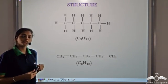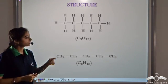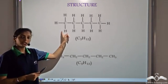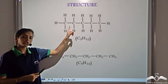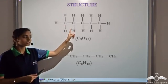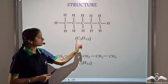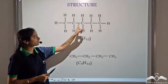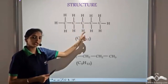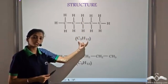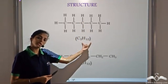We have seen how to write the structure of organic compounds. When we write it showing all the covalent bonds, this is the structural formula. There are 5 carbon atoms and 12 hydrogen atoms, so the molecular formula is C5H12.